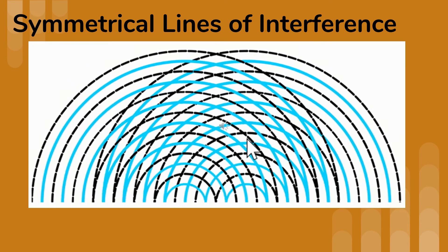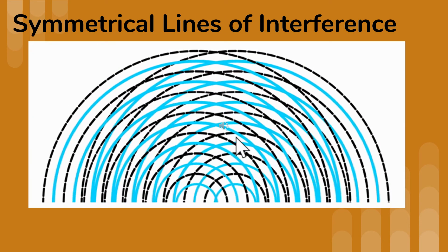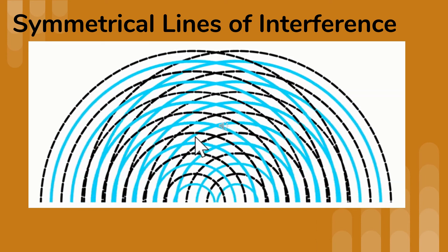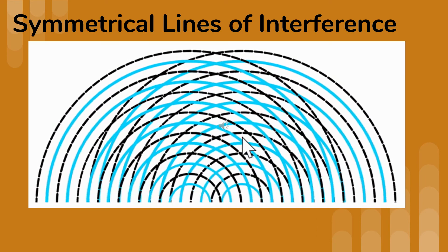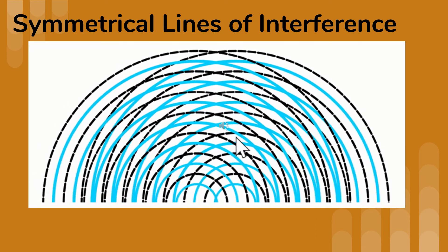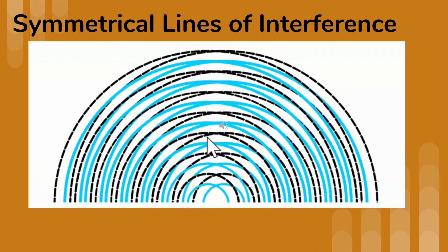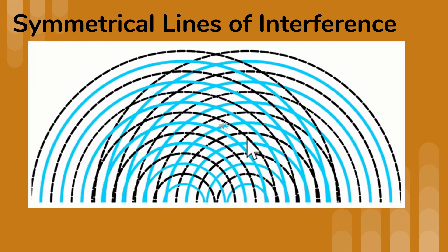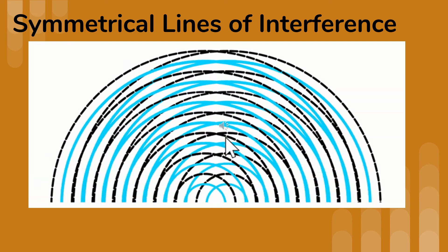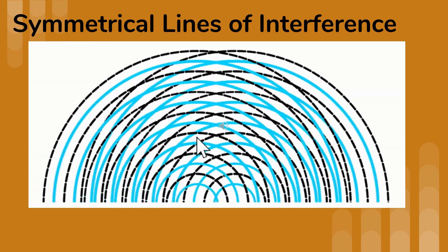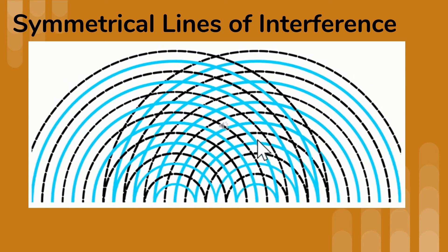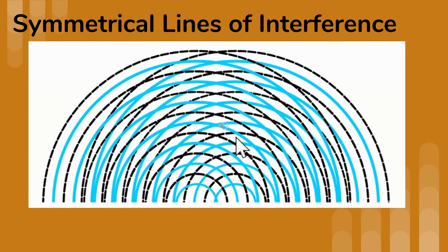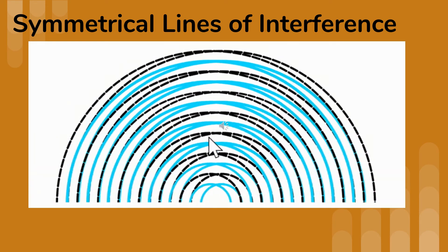The picture in front of you shows the view from above of two overlapping waves. The dotted lines are the troughs and the solid lines are the crests. Notice when you have two wave fronts in phase overlapping, they form a series of symmetrical lines of interference.